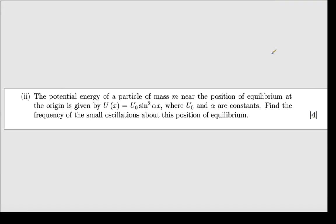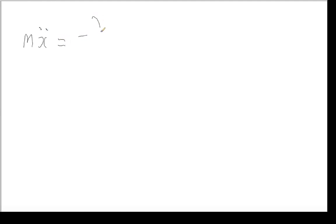How do we find the frequency of small oscillations given just a potential? We're oscillating about the equilibrium point. There are a couple of things we need to know preliminarily. We'll use Newton's law in this format: we can write the force as the negative of the derivative of the potential.